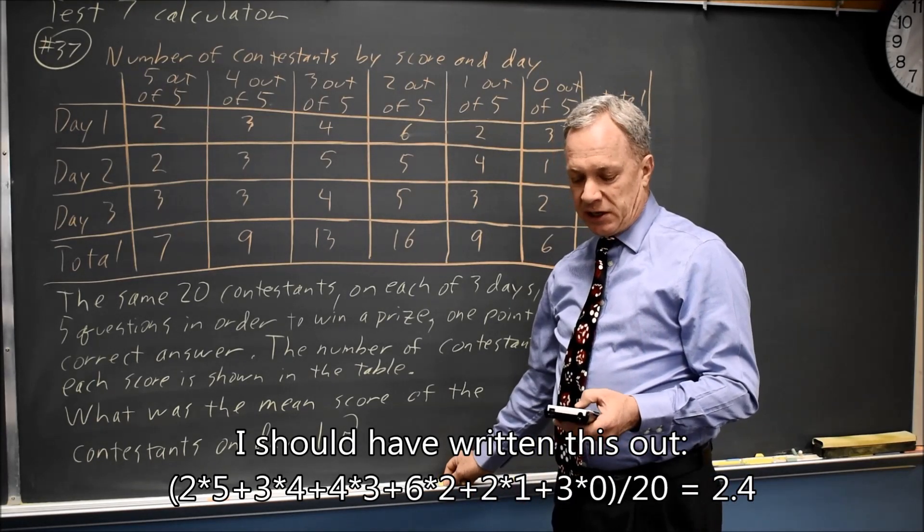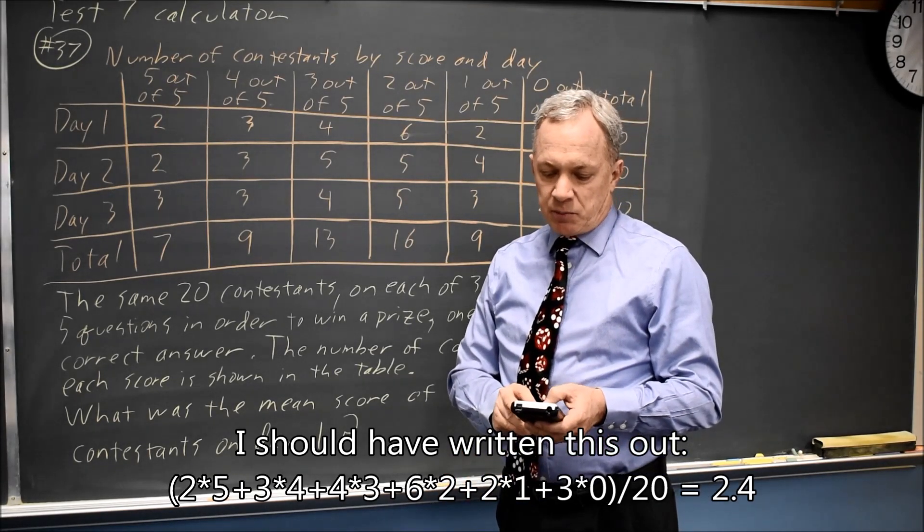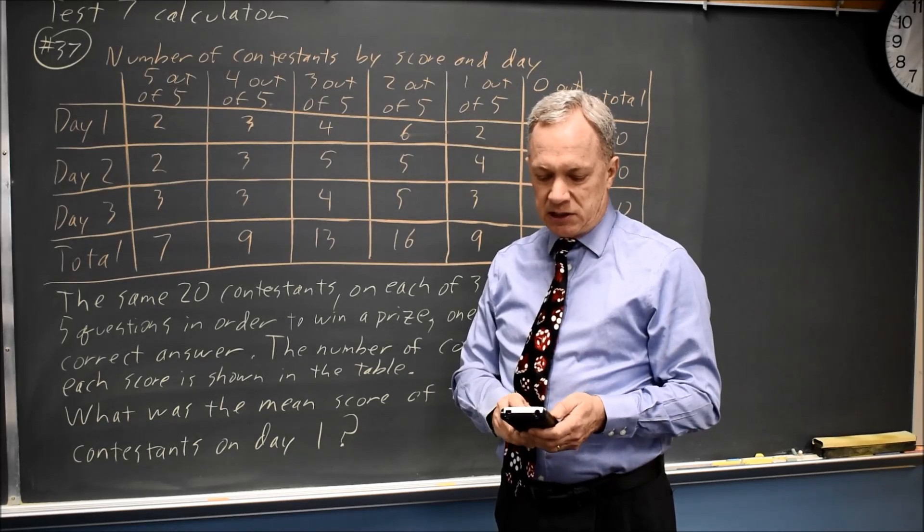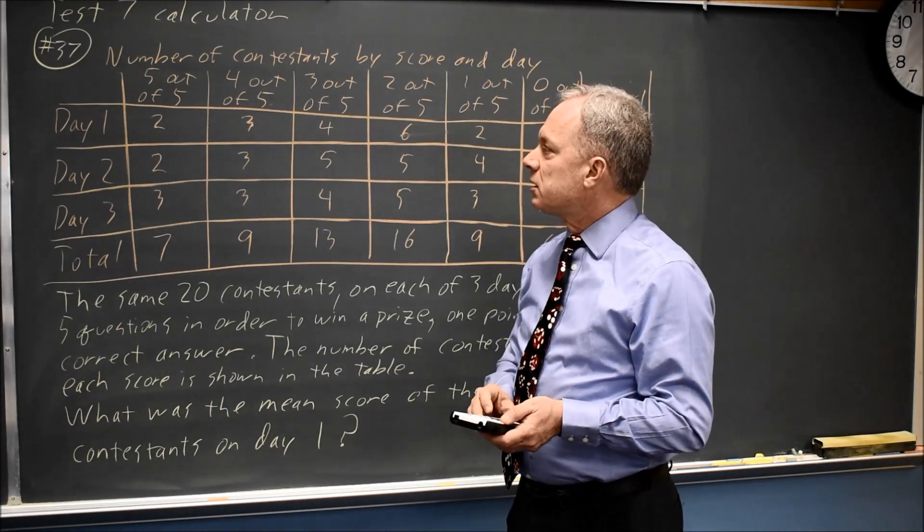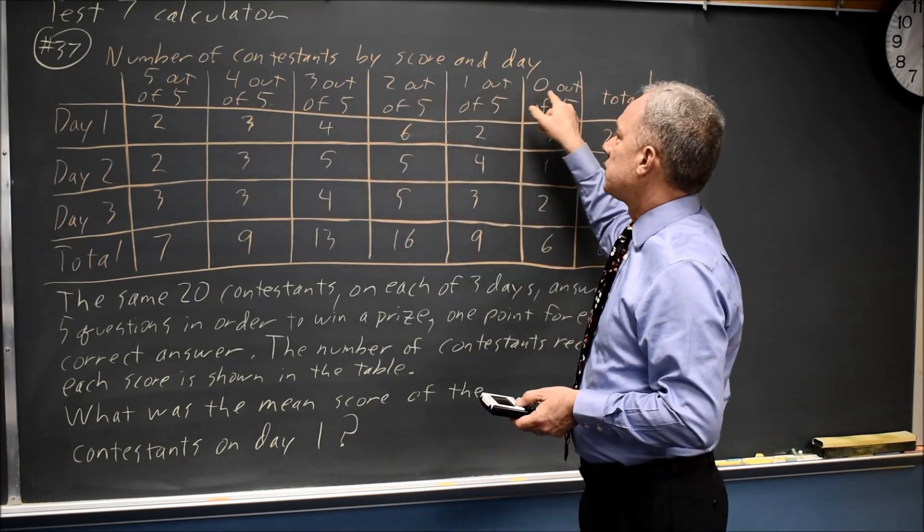Or I can use my calculator, the stat feature. Hit the button for stat, hit enter for edit, and then I go to list 1, and I type in the values: 5, 4, 3, 2, 1, and 0.